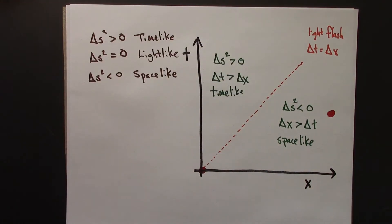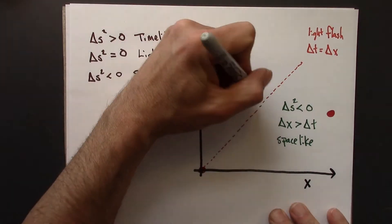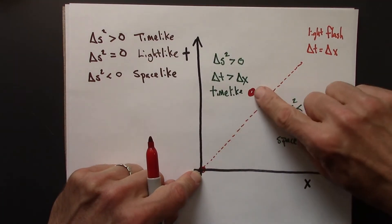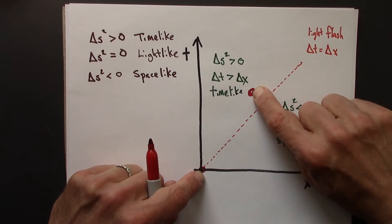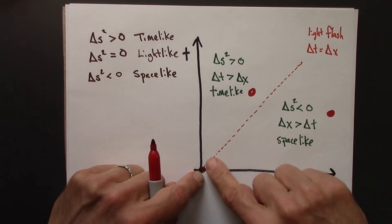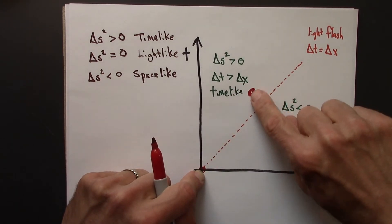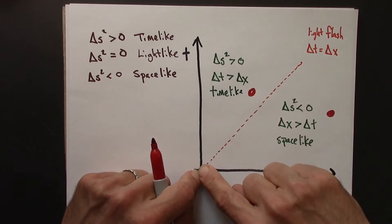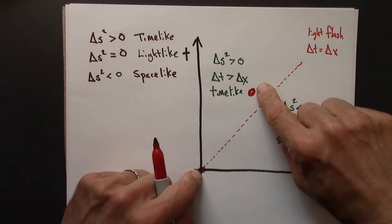So if I have any event in the triangle here, these two events, this interval would be time-like. Why? Because there's some other reference frame in which these two events are separated only by T. They happen at the same place. The only thing that varies is time.